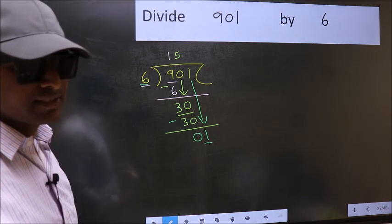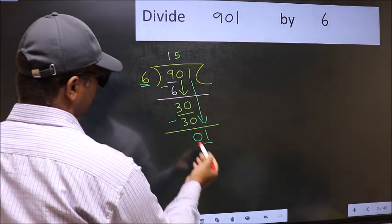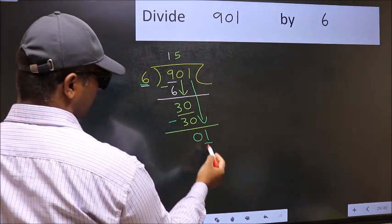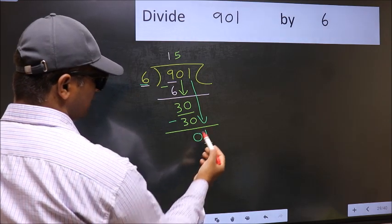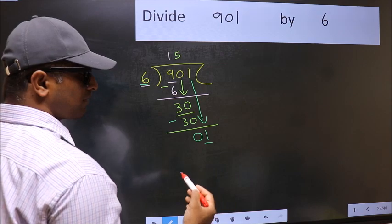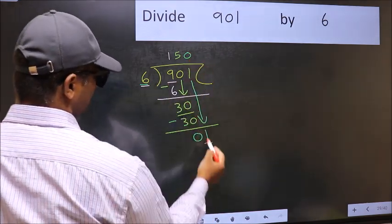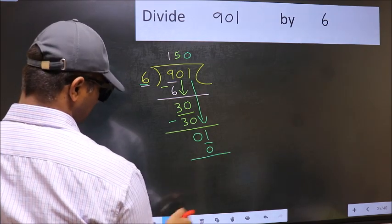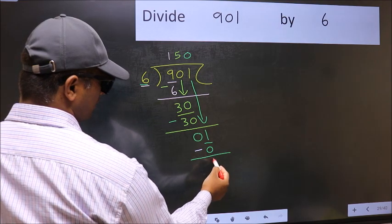what you should think of doing is, what number should we write here. If I take 1, we will get 6. But 6 is larger than 1. So what we should do is, we should take 0. So 6 into 0, 0. Now you should subtract. 1 minus 0, 1.